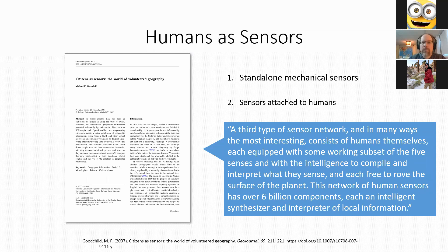Goodchild describes the third type very poetically: 'A third type of sensor network, and in many ways the most interesting, consists of humans themselves, each equipped with some working subset of the five senses and with the intelligence to compile and interpret what they sense, and each free to rove the surface of the planet.' Humans report on their environment socially, and the internet allows us to tap into those social interactions on networks such as Twitter.